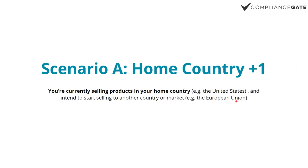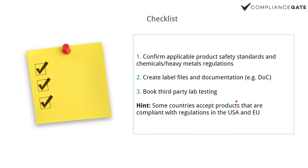I'm going to start with Scenario A. This is by far the easiest one: home country plus one. So you're selling products in your home country, for example the United States, and you want to start selling into another country market, for example the European Union. It's pretty basic — it's just the way you deal with compliance for your own country, but applied to that other country or market. You look at the regulations that apply: safety-specific technical standards such as EN or ASTM standards, and chemicals and heavy metals regulations. You create or complement your existing label files to comply with not just one but two different countries. You book lab testing to test your product according to regulations in that country. And yeah, that's pretty much it — plus documentation.